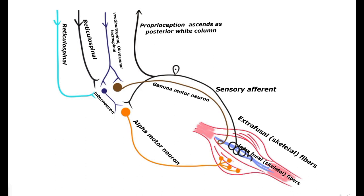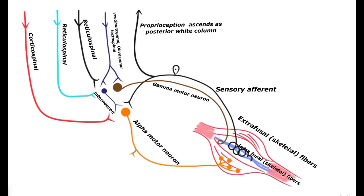The interneuron in turn feeds the alpha motor neuron, which is the final common pathway of the motor fibers ending on the muscle fibers. The corticospinal tract — the majority of its fibers — ends on the alpha motor neurons, facilitating motor activity. The remaining minor descending fibers modulate the motor action.